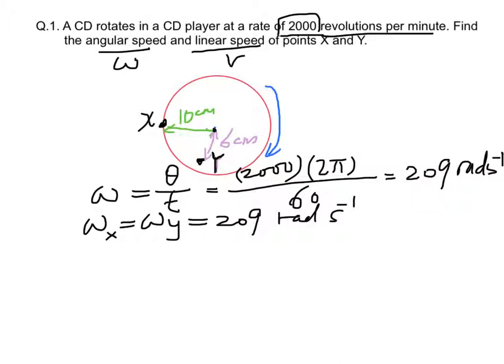The formula for linear speed v is equal to angular speed omega times the radius. Therefore, velocity at x equals 209 times radius at x equal to 10 cm, which is 0.1 meter. vx equals 20.9 meters per second.